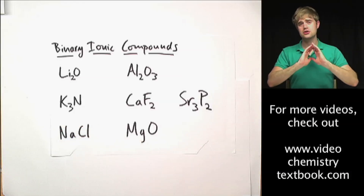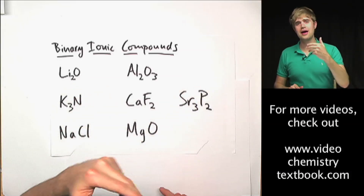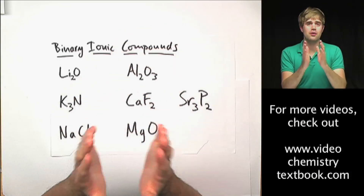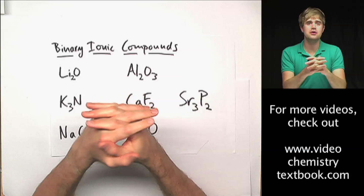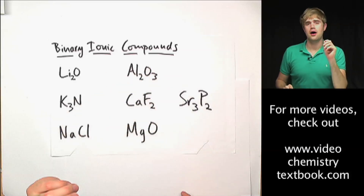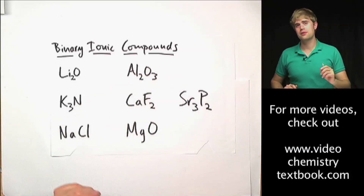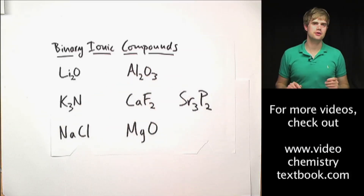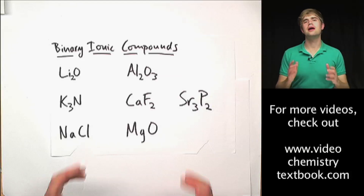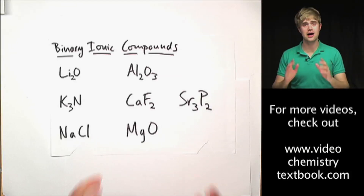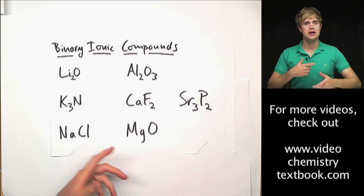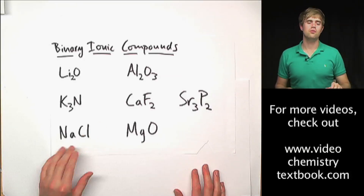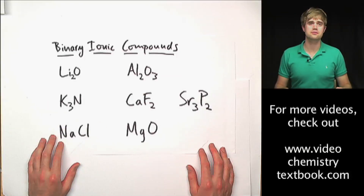If this is all good for you, go ahead and move on with the videos. You'll probably want to check out the videos on writing formulas for compounds that have transition metals, and then writing formulas for compounds that have polyatomic ions, and you can just keep moving ahead with naming these compounds.